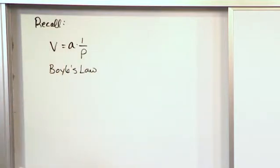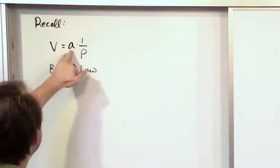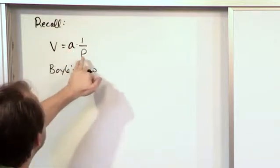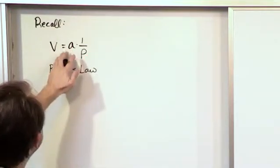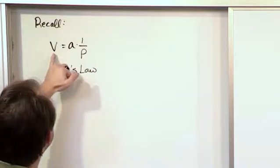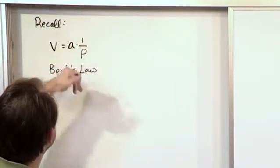Remember that? We didn't really ever find this constant - it wasn't really necessary - but this was one way of writing Boyle's law. You can go back to the Boyle's law lecture to see how we got there. Basically, it means volume and pressure are inversely related to one another.